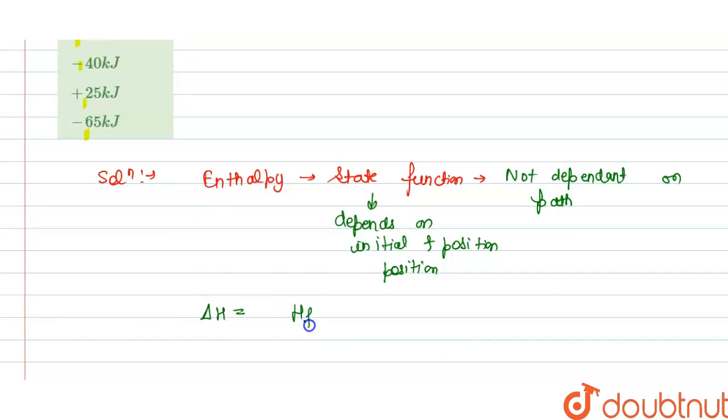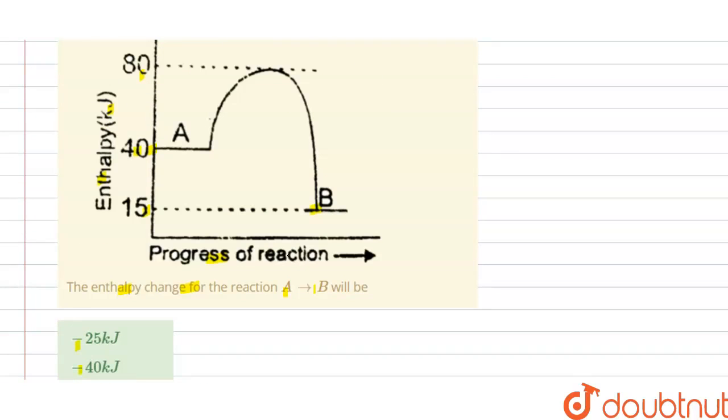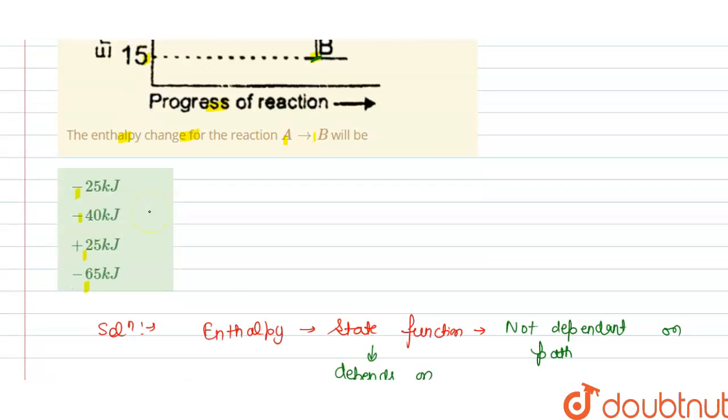Delta H is H_f minus H_i, that is final enthalpy minus initial enthalpy. So at A, this is our initial enthalpy, and at B, this is our final. We can write: